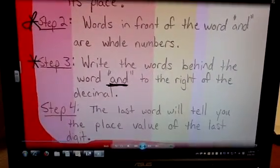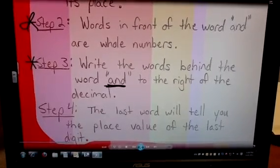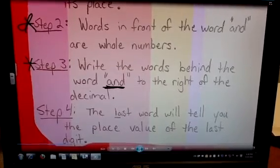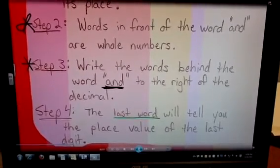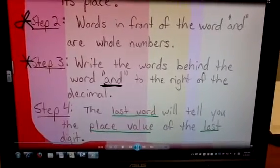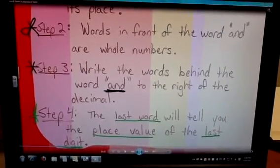Now, when we look at step number four, it is a pretty difficult step, but what we simply do is look for the last word, and that last word will tell you the place value of the last digit that we have. Let's try a couple examples.